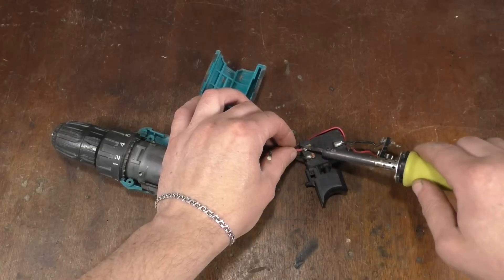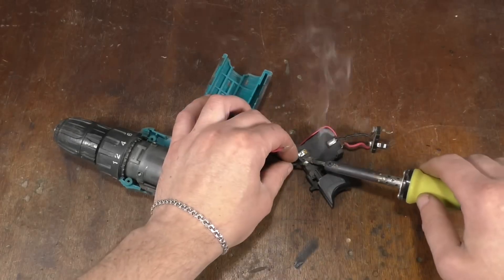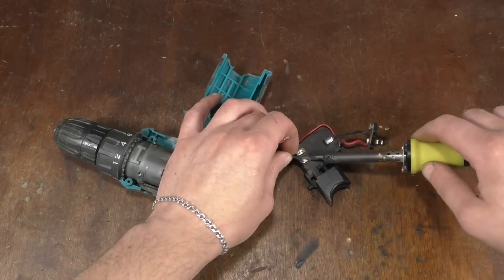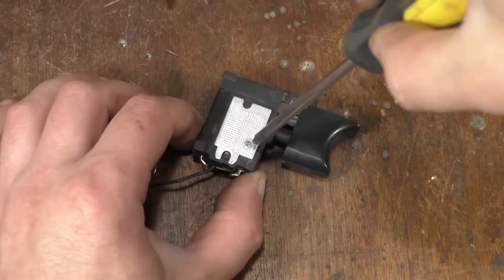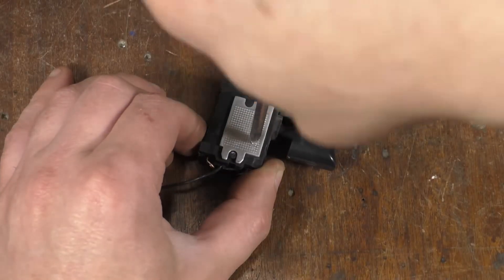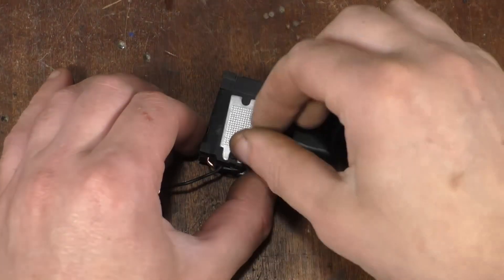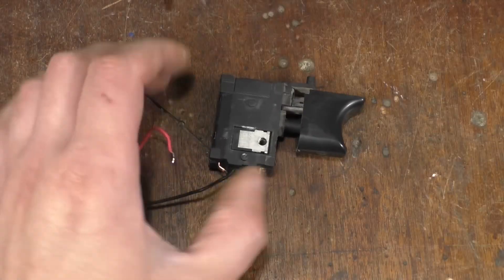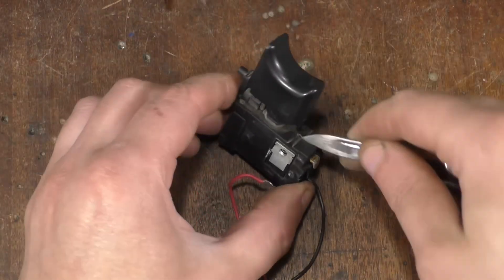First, you need to desolder all the wires that go to the button. There is a metal plate on the button that you need to remove by unscrewing one screw. After that, you can easily open the button using a knife.